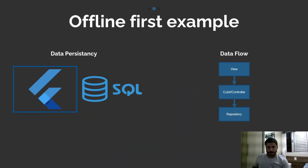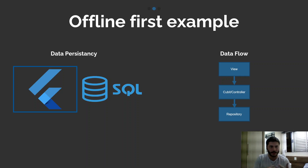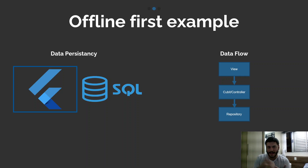For this example we'll use a SQL relational database for data persistence. The data flow is simple: a view will initiate a controller — in this case we'll use a Cubit, which is a very famous state management solution in the Flutter community — and we'll access the repository to get our data, either remote or local.